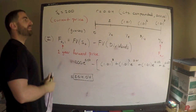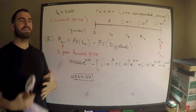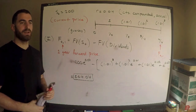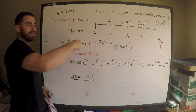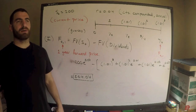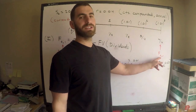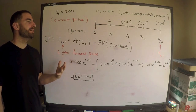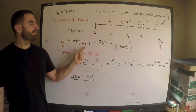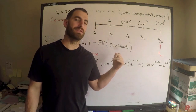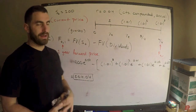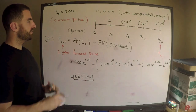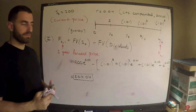To recap: the forward price is what I pay in one year to receive the stock that same day. When the contract is established at time zero, the buyer is obligated to buy and the seller to sell at expiration — one year. The fair price is the future value of the current price minus the future value of the dividends. Things would be slightly different if dividends were paid continuously.